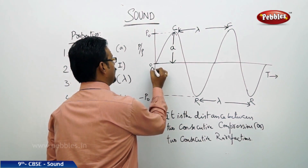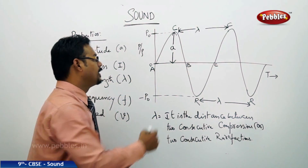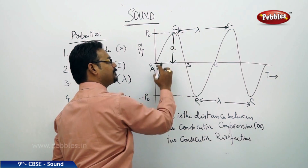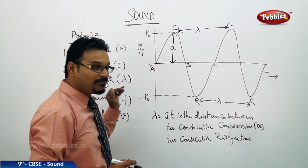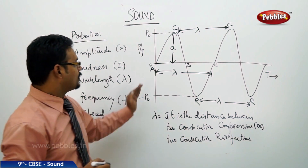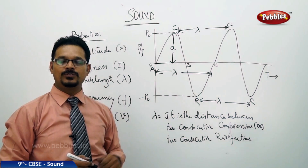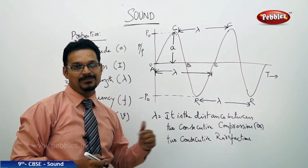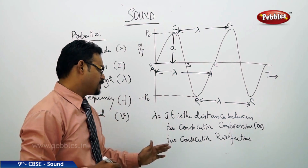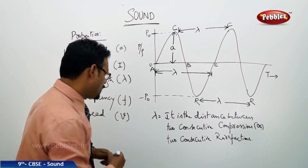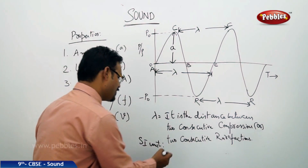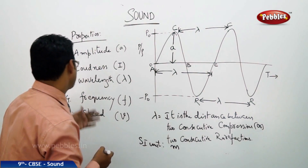You can also define wavelength as the distance traveled by a complete wave — labeled A, B, C on the board, representing one complete wave. So the second definition is: the distance traveled by the wave in one complete cycle is also called the wavelength. The SI unit of wavelength is meters, since it is a distance.